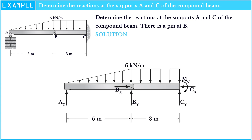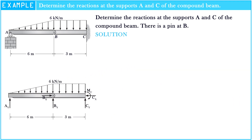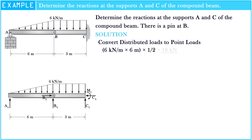In order to determine the reaction of the support, first we should convert the triangular distribution loads and uniformly distribution loads to point loads. The triangular distribution load: 6 kN/m multiplied by 6 meters multiplied by 1/2 equals 18 kN. The uniformly distributed load: 6 kN/m multiplied by 3 meters equals 18 kN.